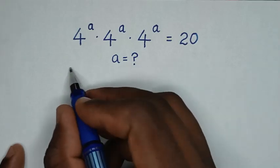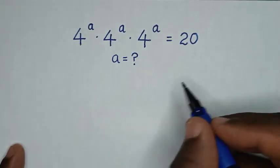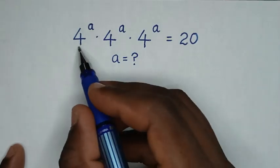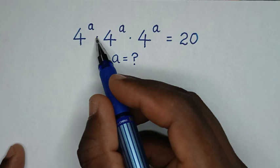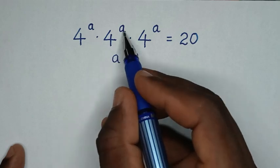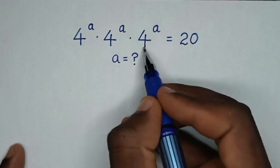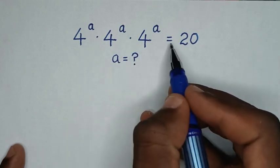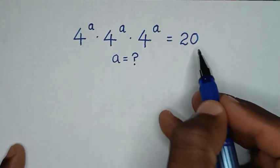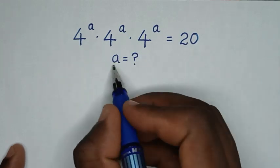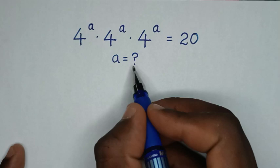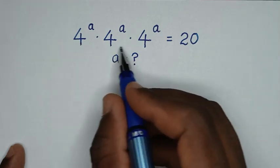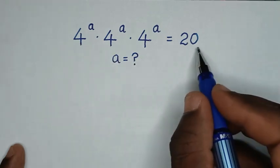Welcome. You are invited to solve this math problem, which is 4 power of a times 4 power of a times 4 power of a is equal to 20. We need to find the value of a from this equation.